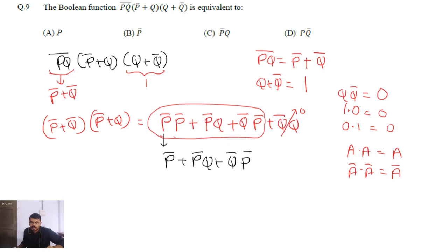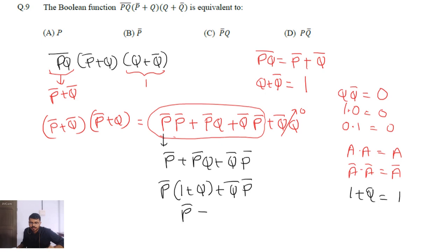Now making p̄ common from the first two terms gives p̄·(1 + q) + q̄p̄. Since 1 + q = 1, this becomes p̄ + q̄p̄, which is equivalent to p̄·(1 + q̄). Again 1 + q̄ = 1, so this equals p̄.